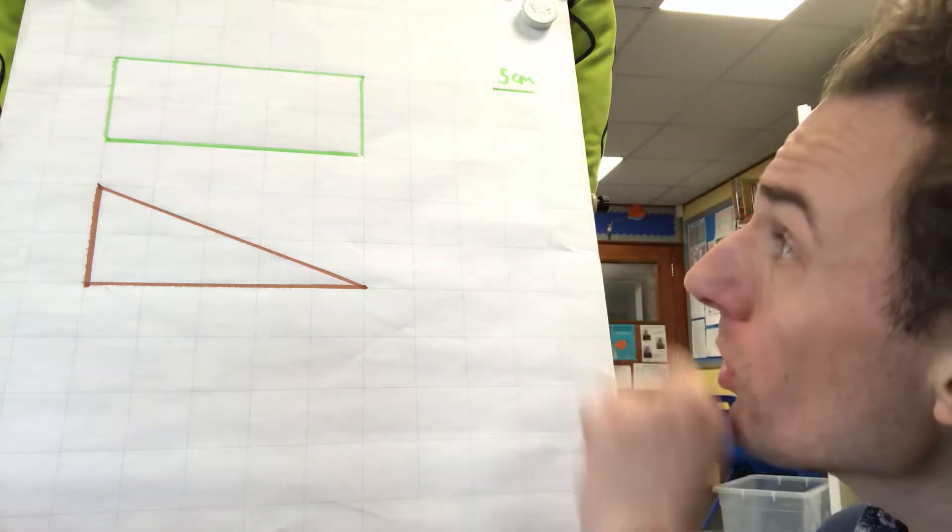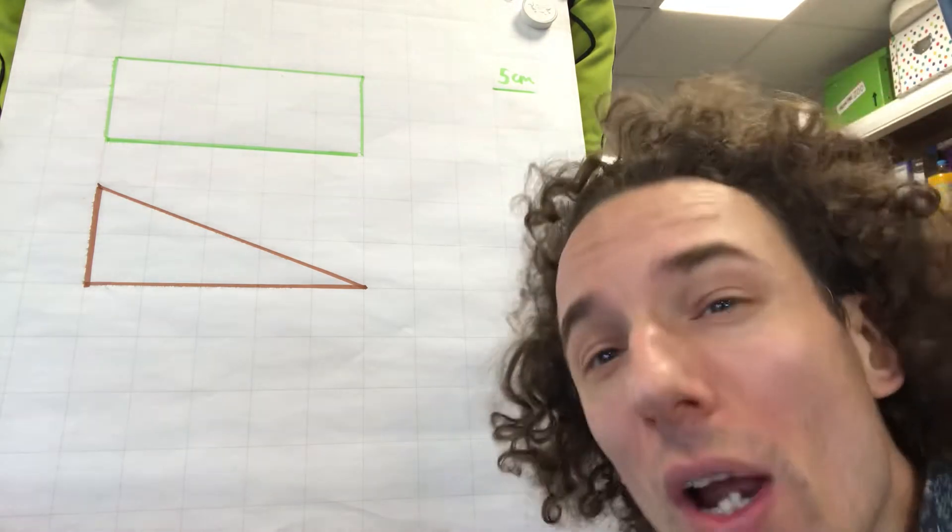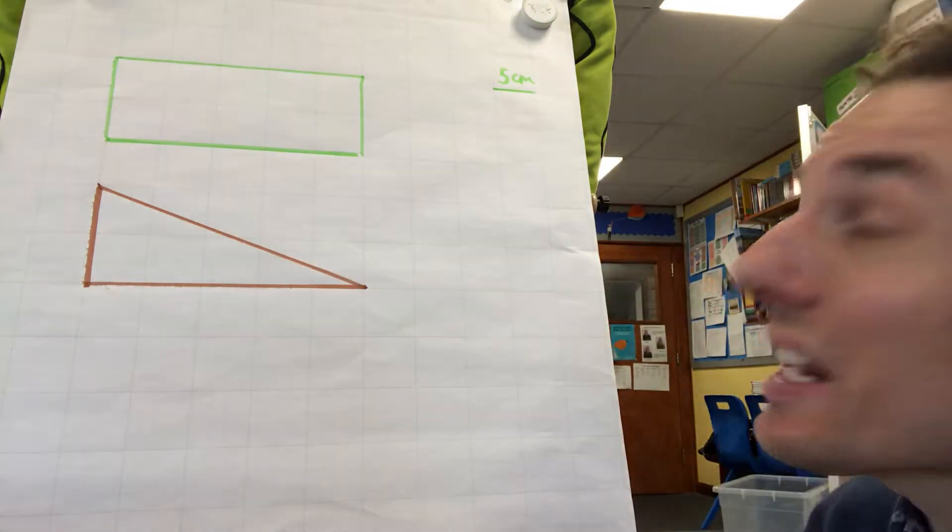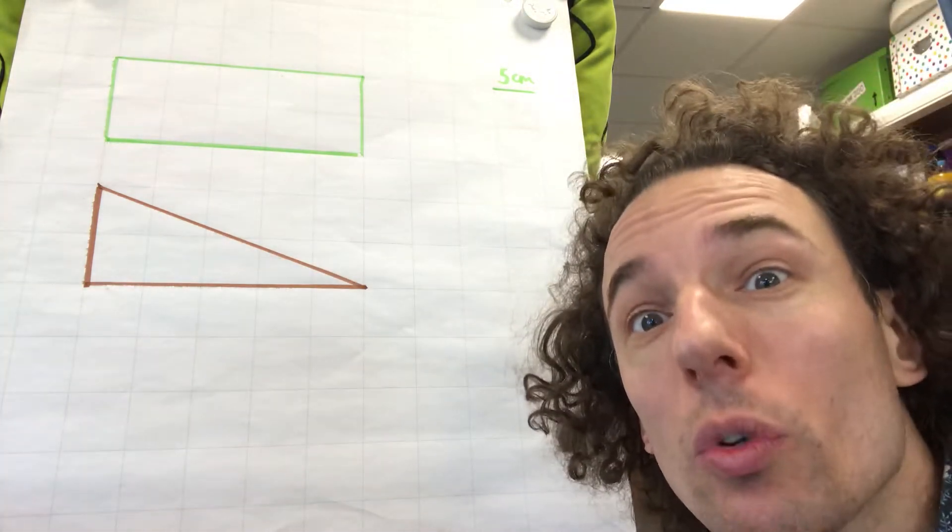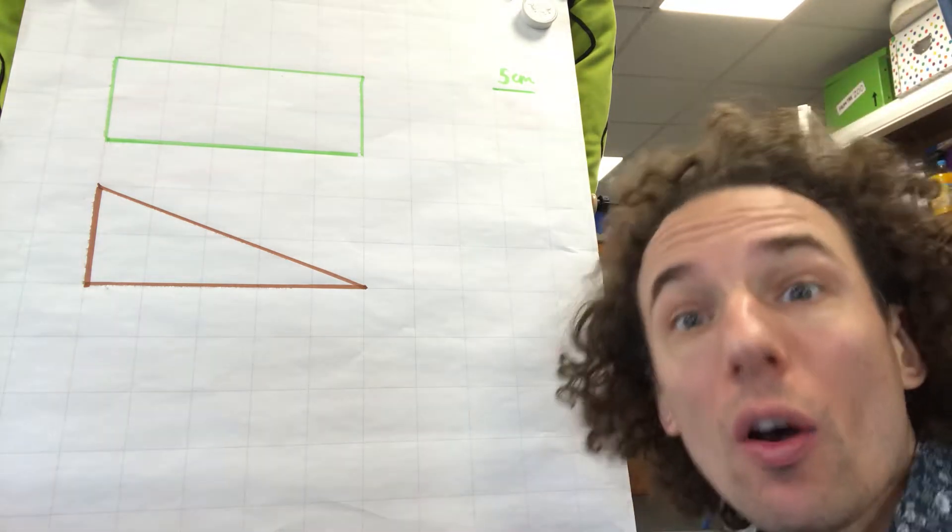Now, I've got on the board here a rectangle and a triangle. And as you might have noticed, the triangle is exactly half the size of the rectangle. So therefore, the area will be half the amount.